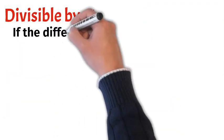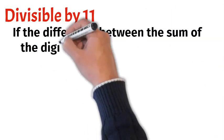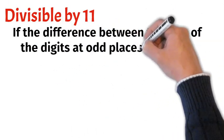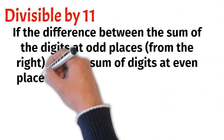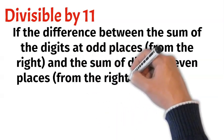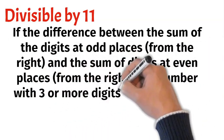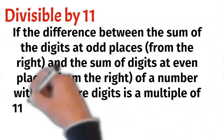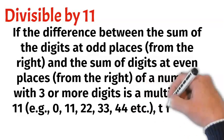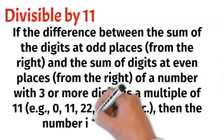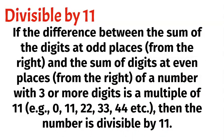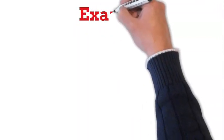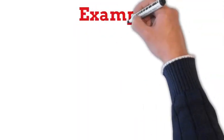Divisible by 11. If the difference between the sum of the digits at odd places and the sum of the digits at even places of a number with 3 or more digits is a multiple of 11, then the number is divisible by 11. Let's take some numbers.